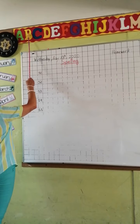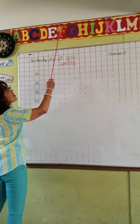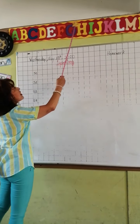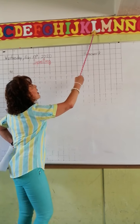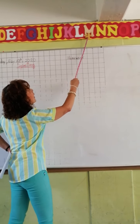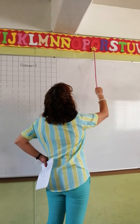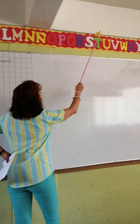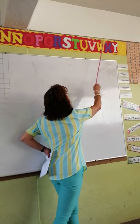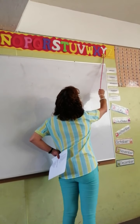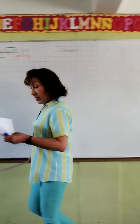A, B, C, D, E, F, G, H, I, J, K, L, M, N, O, P, Q, R, S, T, U, V, W, X, Y, Z. Very good, kids.